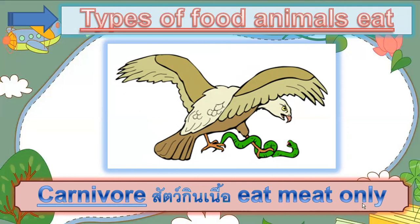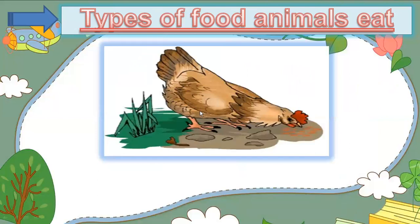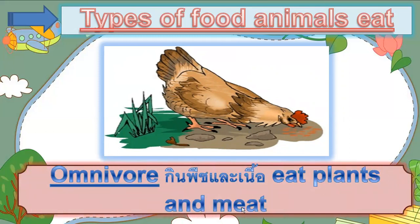Next, we have chicken. Chicken eat small earthworms, some rice, small fruits, and all kinds of food. So these animals eat both plants and meat. They are called omnivores. Omnivores eat plants and meat. We have chicken, dog, cat, pig, and duck. Those animals are omnivores.